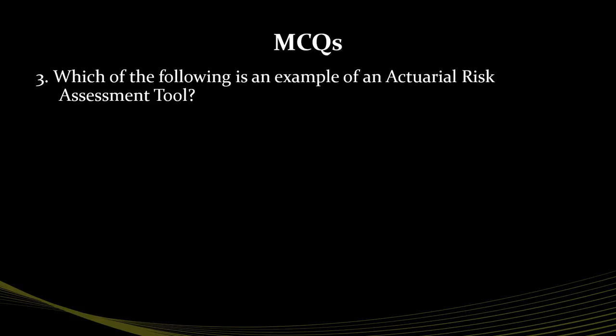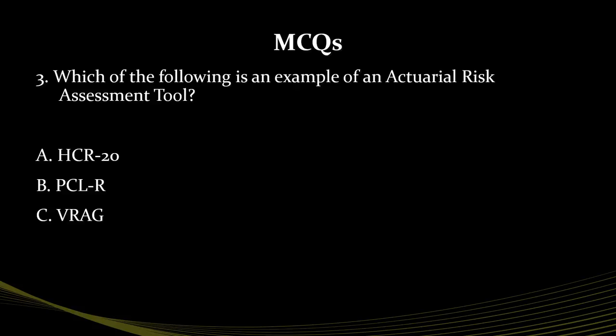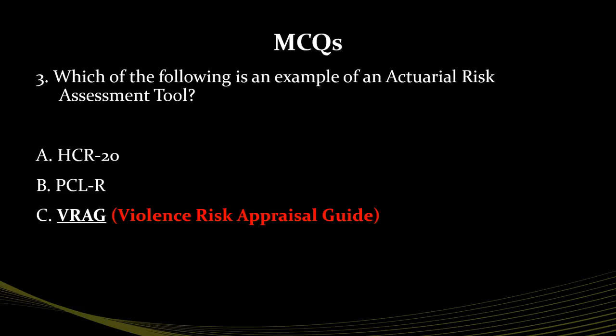Question 3: Which of the following is an example of an actuarial risk assessment tool? Is it the HCR-20, the PCL-R, or the VRAG? The correct answer is the VRAG. The other two are also risk assessment tools, but they are not actuarial. VRAG stands for Violence Risk Appraisal Guide.